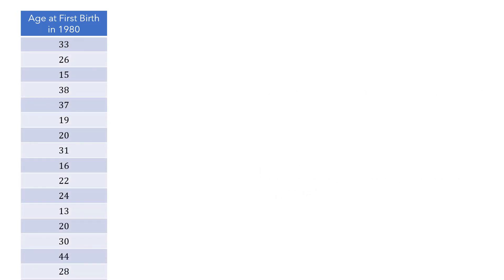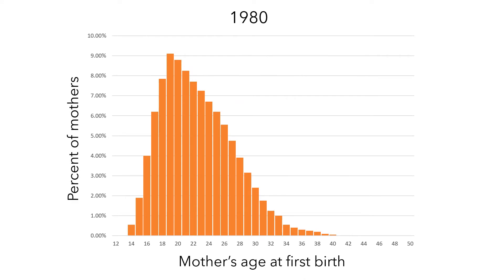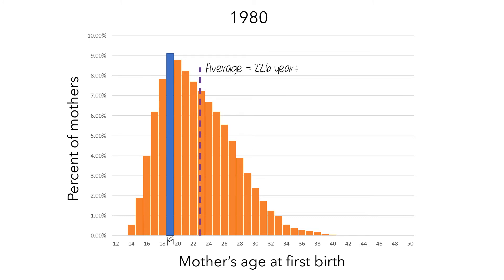Here are the data for 1980. Let's represent these data with a histogram. In this graph, each bar shows the percent of the population that had their first child at each age. For example, this bar is over the value 19, and its height is just over 9%, telling us that just over 9% of mothers in 1980 had their first child when they were 19 years old. Since this is the tallest bar, we'd be inclined to think this would be the age at which mothers typically had their first child. However, the average we computed was 22.6 years, so these two ways of looking at the data are telling us different things.